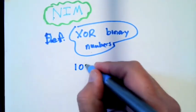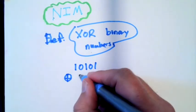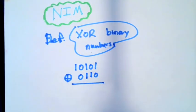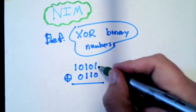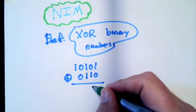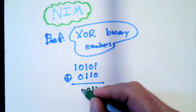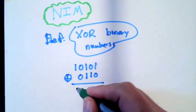If you XOR two binary numbers, then you just make it so that anytime there's an even number of ones, it becomes zero, and zero is also an even number. So one XOR zero is one, zero XOR one is one, one XOR one is zero, zero XOR zero is zero, one XOR zero is one.